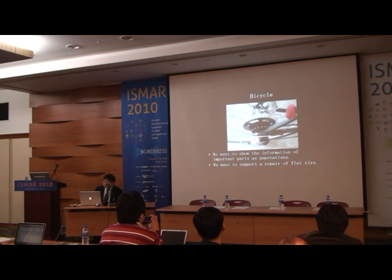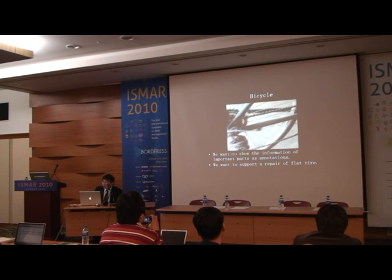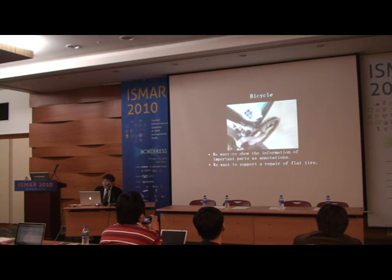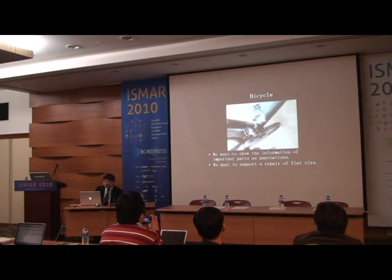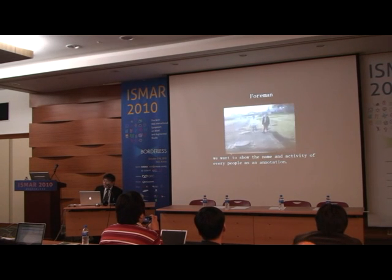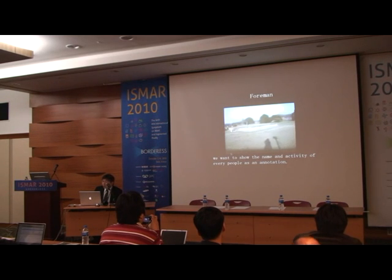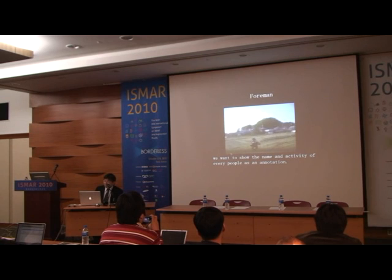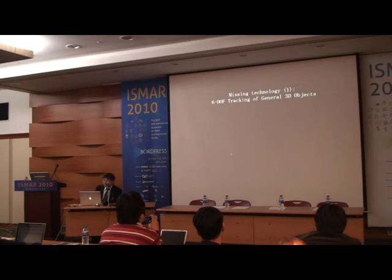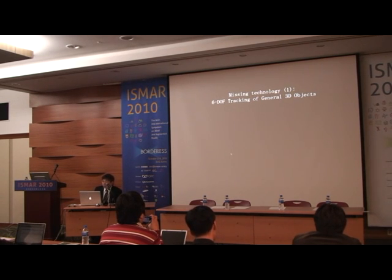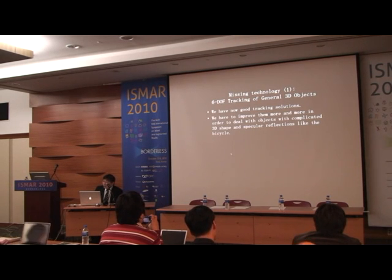Consider this bicycle example — we want to show annotations of important parts, or support a repair task. Is that possible with current technology? Or consider a scenario where some people are working together and we want to show the name and activity of every person as an annotation. I think it's not easy. There are three problems. The first is 6DOF tracking of general 3D objects — we have good tracking solutions now, but we need to improve them to deal with objects with complicated 3D shapes and specular reflections like the bicycle.